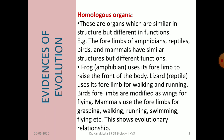Let us see different functions of forelimbs in these organisms. Frog uses its forelimbs to raise the front part of the body. Lizard uses its forelimbs for walking and running. Birds' forelimbs are modified into wings for flying. Mammals use forelimbs for grasping, walking, running, swimming, flying, etc., depending upon the type of mammal. All these animals are different, belonging to different classes but of the same phylum, and this shows that there is an evolutionary relationship among themselves.